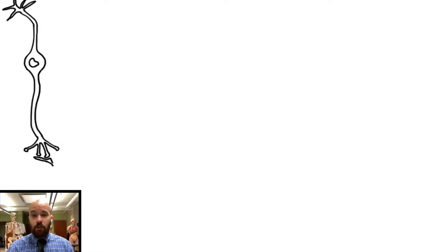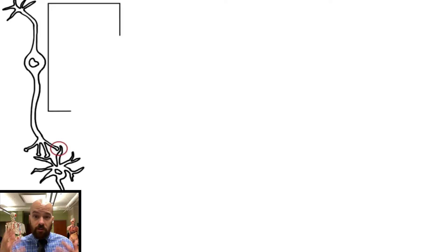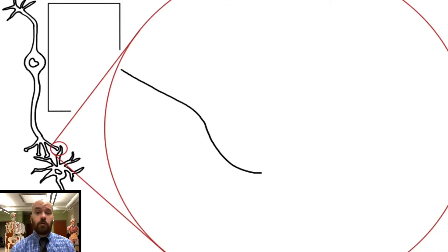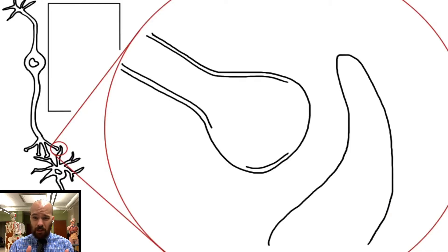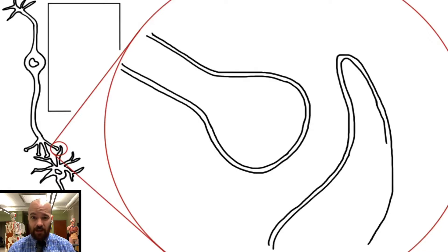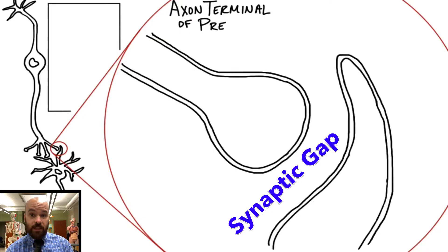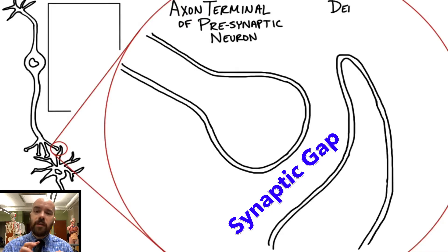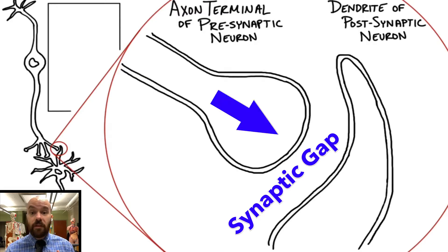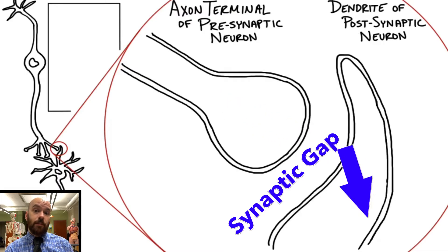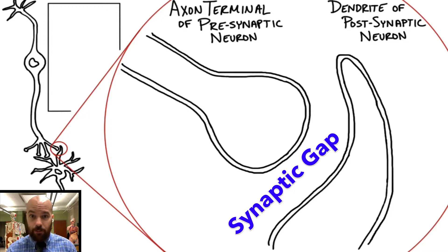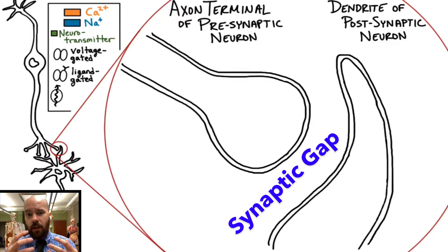Directly above me, we have two neurons drawn, and we're zooming in on the connection between the two neurons. If you look really closely, they're actually not physically connected. There's a space in between them, and we call that the synaptic gap or synaptic cleft. We have the axon terminal of the presynaptic neuron on the left, and a dendrite of the postsynaptic neuron on the right. The signal is going to get sent from the presynaptic neuron to the postsynaptic neuron. Also drawn above me is a key that will help you keep track of the different channels, neurotransmitters, and other elements we're going to draw in our image.